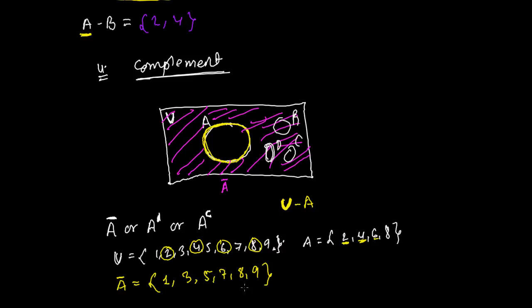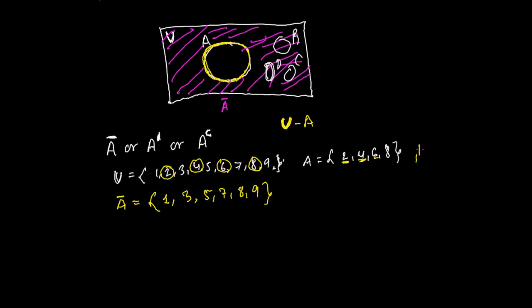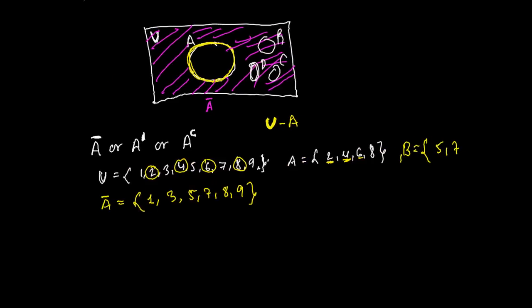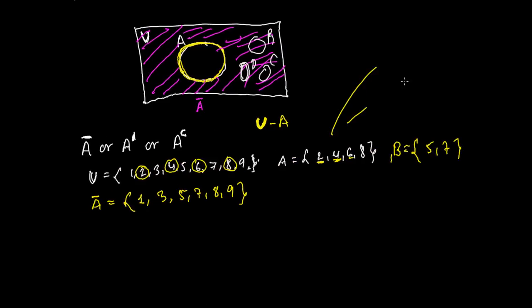And what would you do if there were more sets like B, suppose 5 and 7. So it does not matter how many sets are there, if I have to write A complement, I will just not write the elements of A and rest of this all I will write, this is what A complement means.